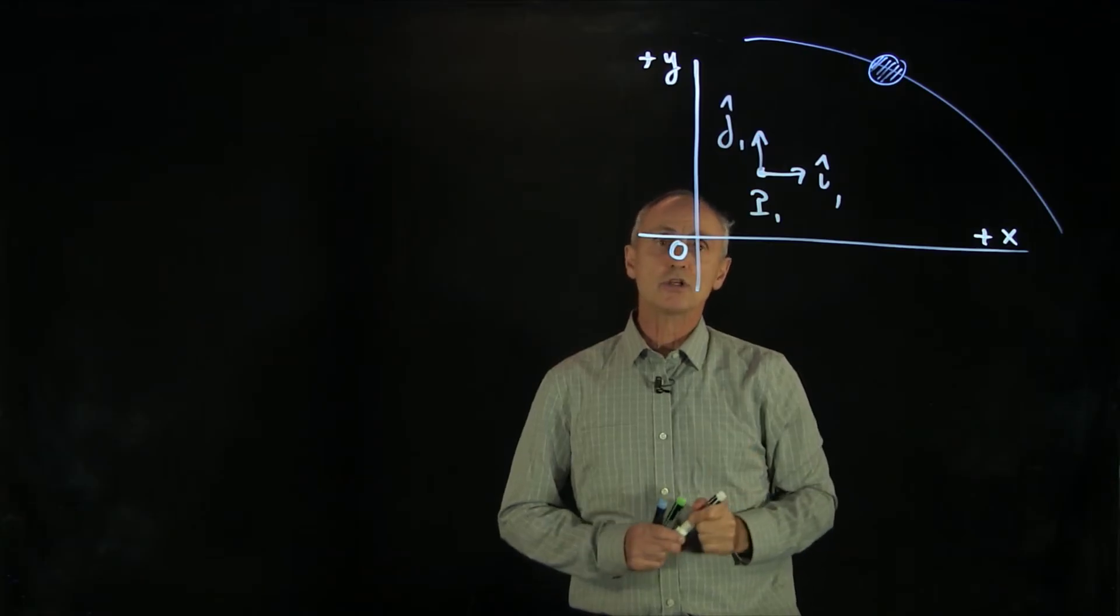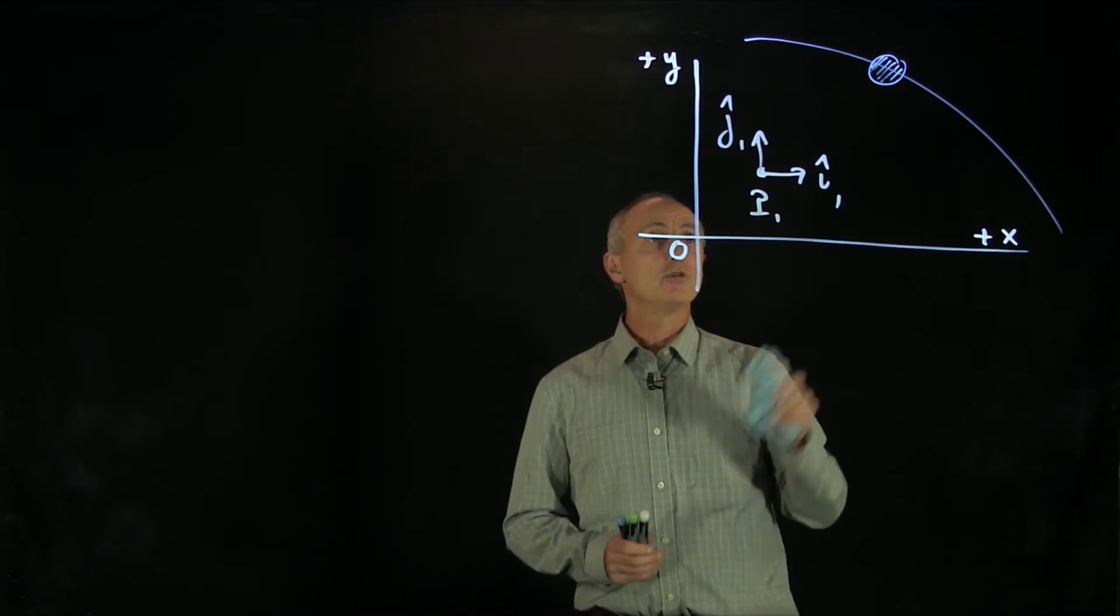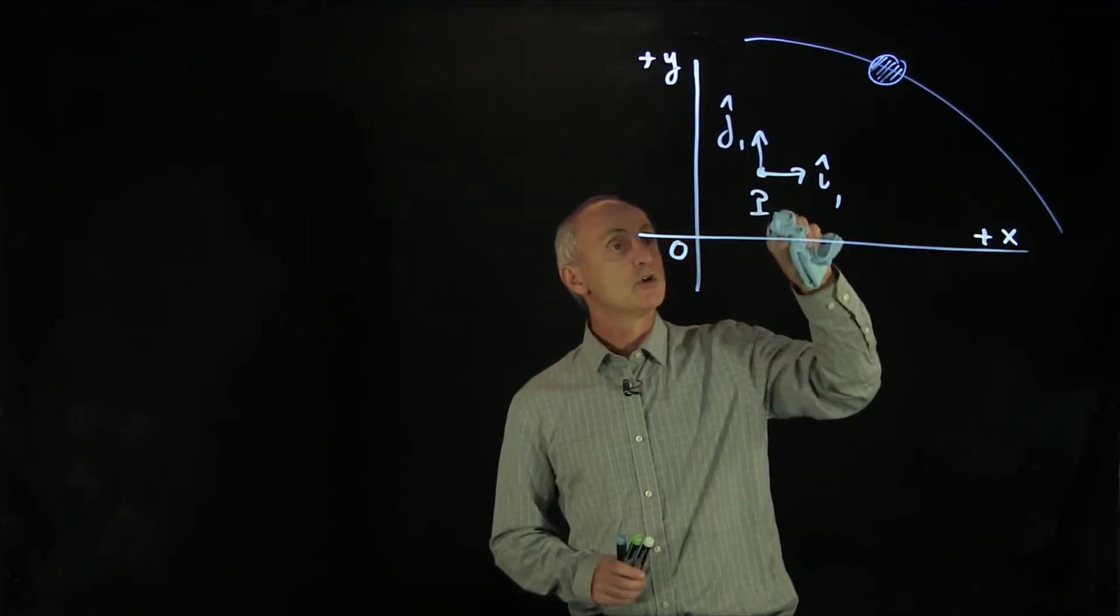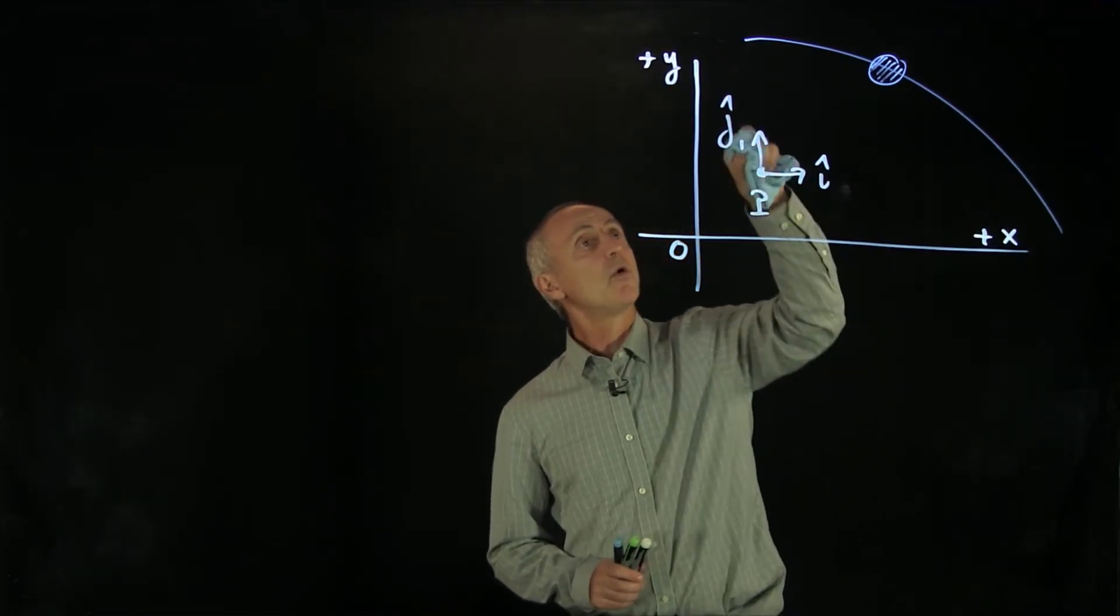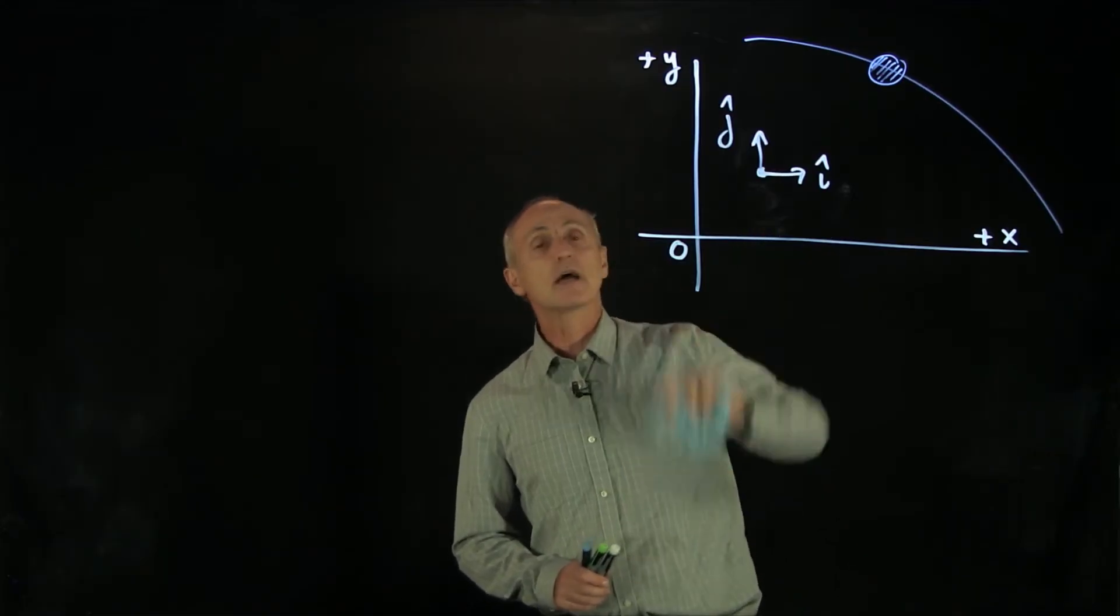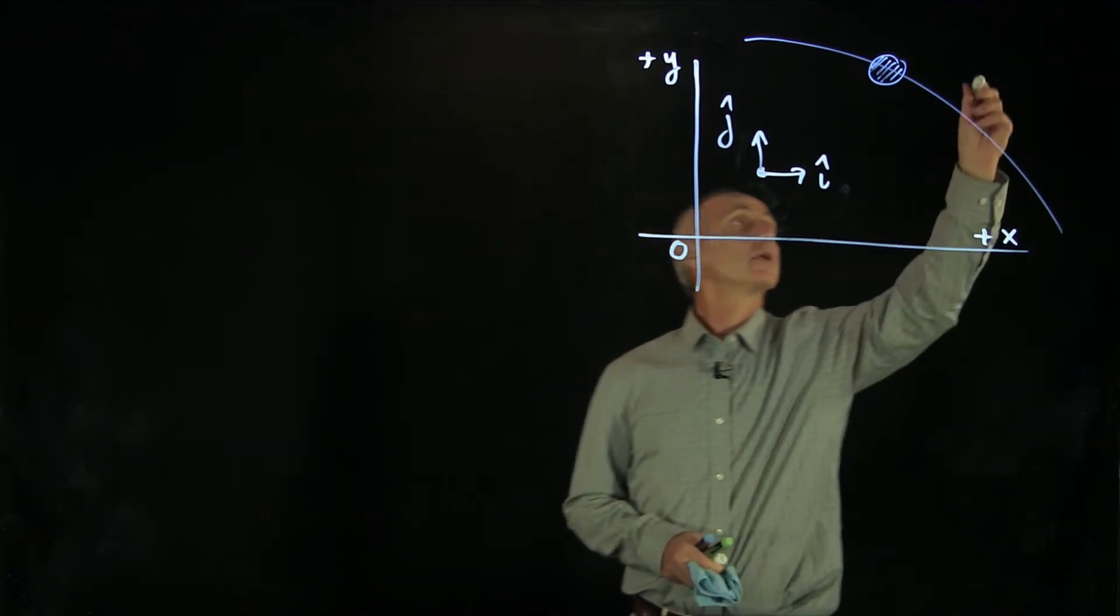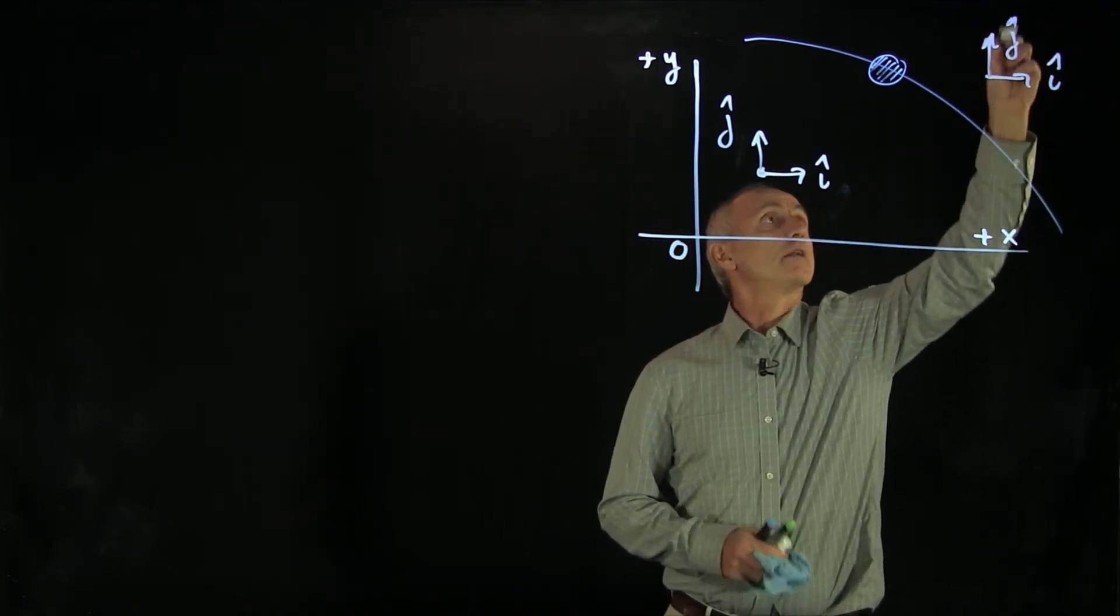Now, what makes Cartesian coordinates unique is that no matter what point we're at, the unit vectors are all the same. So we could erase all these indices for that particular point and just have an abstract set of unit vectors i hat and j hat. Normally what we'll do is we'll just put those off to the side.